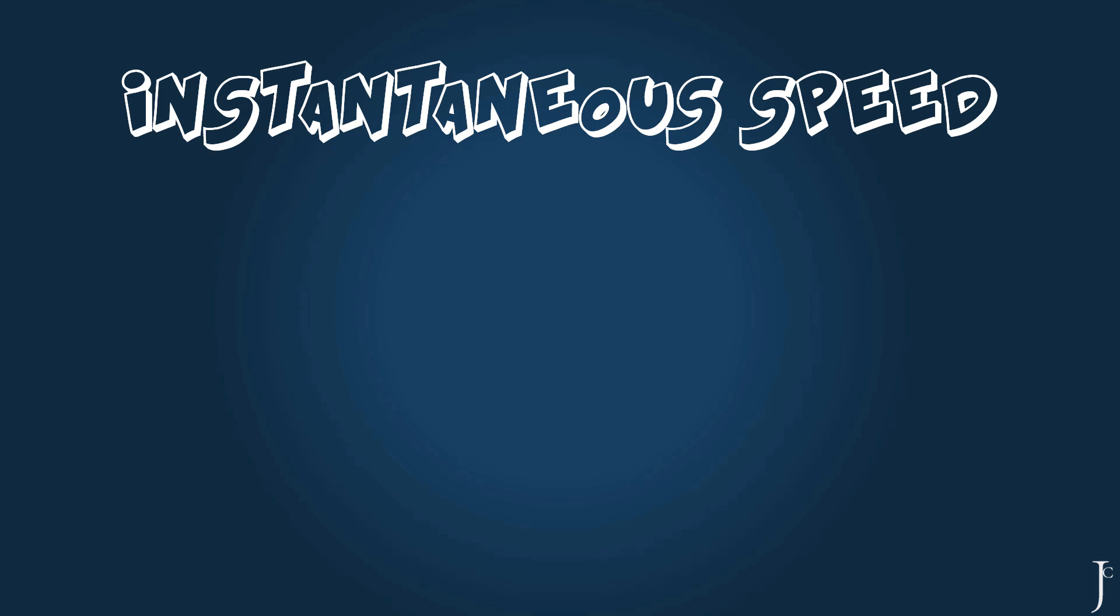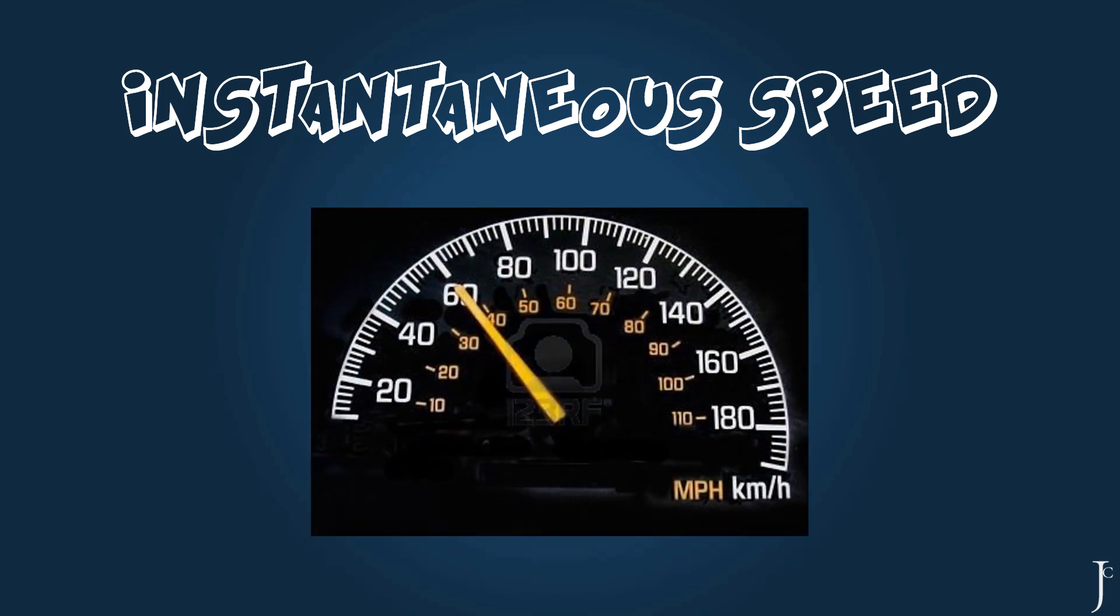So far, we have been discussing average speed. This is quite different to instantaneous speed. Your instantaneous speed can be found by looking at your speedometer. It is the speed that you are going at a particular moment in time. This is quite different to an average speed, which is worked out by looking at how far you've travelled over a complete time period.